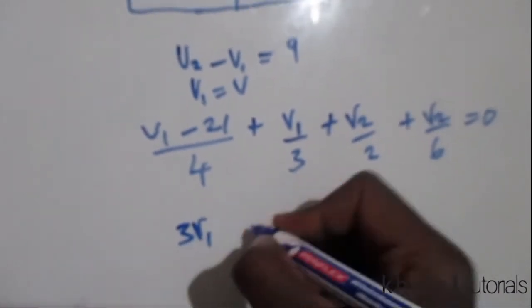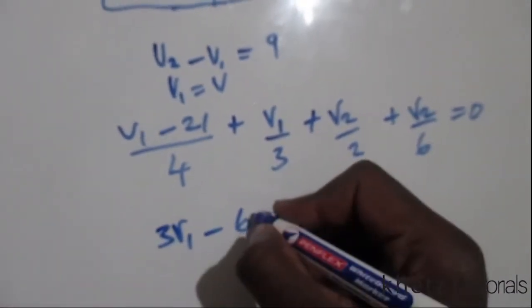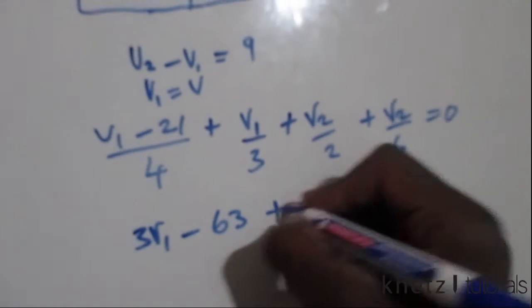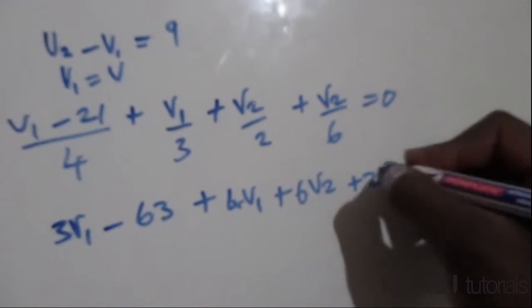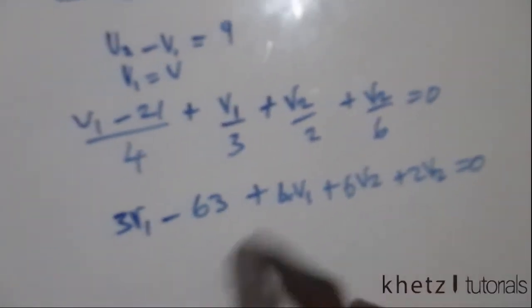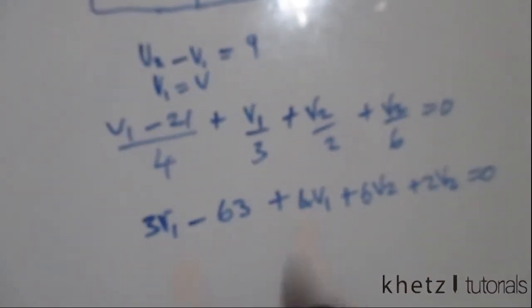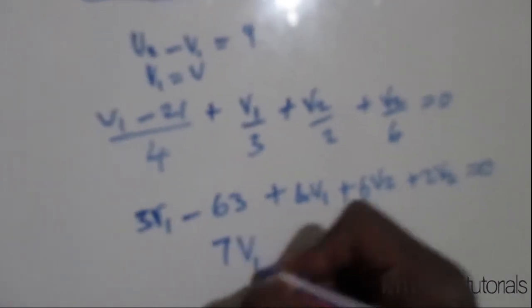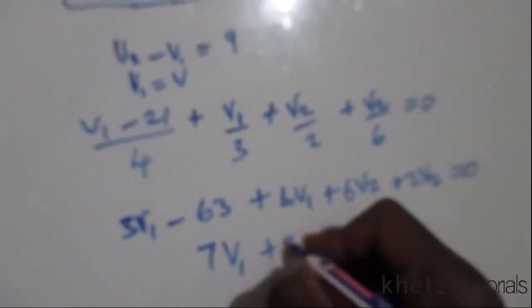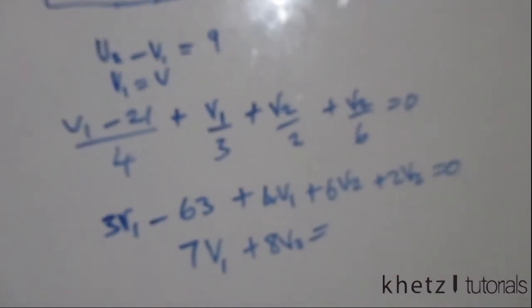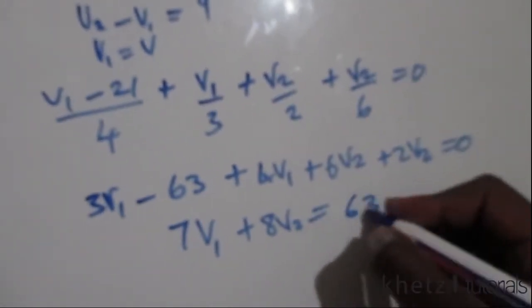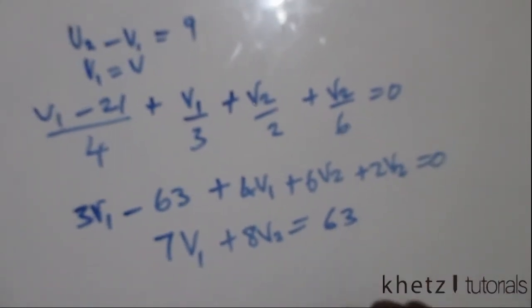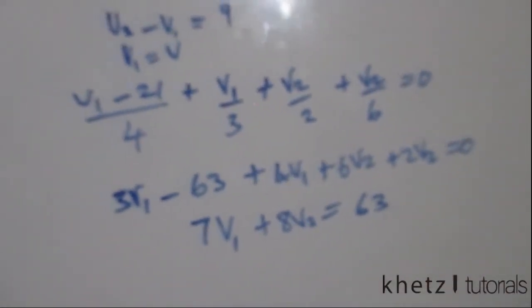So 3v1 negative 63 plus 4v1 plus 6v2 plus 2v2 equals zero. Simplify further: we're going to have 7v1, we're going to have 8v2, and that is going to be equal to 63 on the other side of the equation.